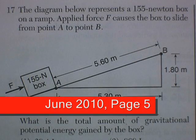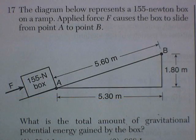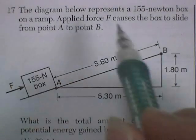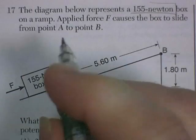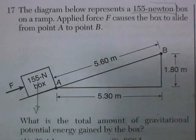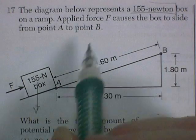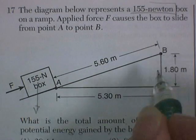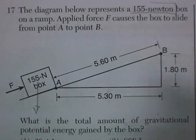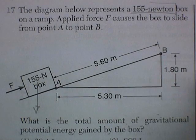We're in the June 2010 exam, and this looks like page 5. Question 17. The diagram below represents a 155-Newton box, so that's the weight going straight down. Applied force F causes the box to slide from point A to point B, distance of 5.6 meters, and a height of 1.8 meters.